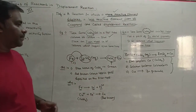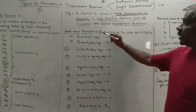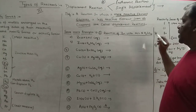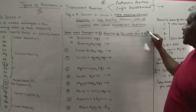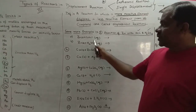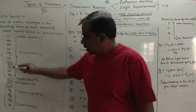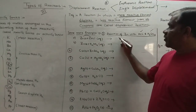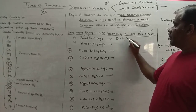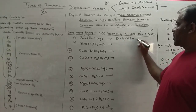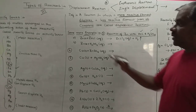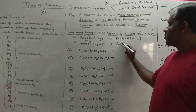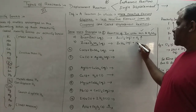Let us see some more examples of displacement reaction. First, we look at the reaction of zinc with hydrochloric acid and sulfuric acid (H₂SO₄). Zinc is clearly above hydrogen in the reactivity series, which means zinc can displace hydrogen. So we expect to form zinc sulfate in aqueous solution, and hydrogen gas is evolved. Similarly, zinc displaces hydrogen from sulfuric acid to form aqueous zinc sulfate along with hydrogen gas.